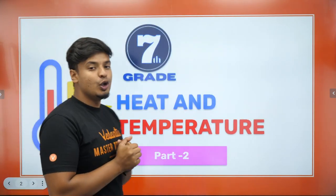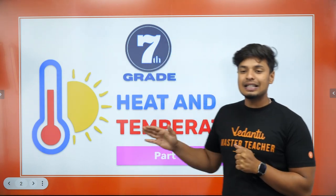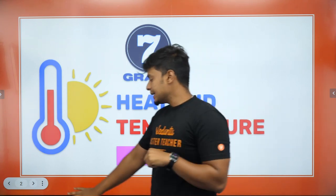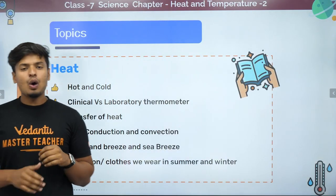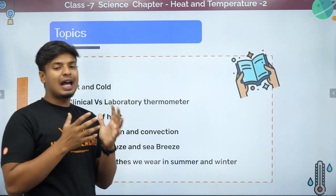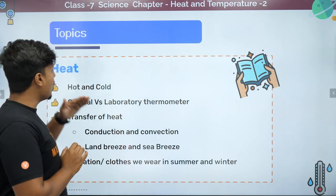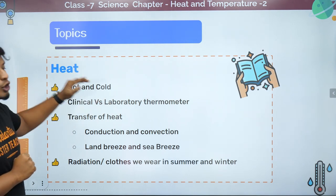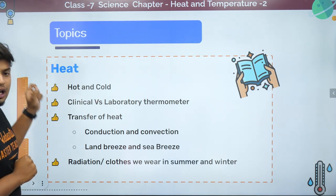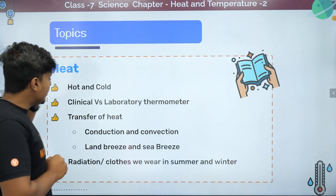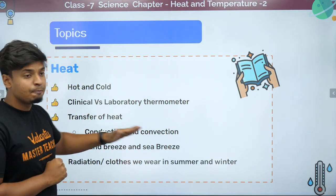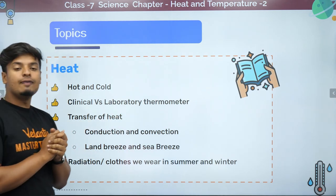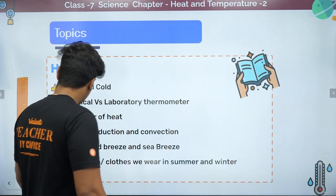This is for Grade 7 — Heat and Temperature, Chapter Part 2. Let's see what topics we have. Hot and cold is done, clinical versus laboratory thermometer is also done. Today's class will focus on the transfer of heat: conduction and convection, land breeze, sea breeze, and radiation.